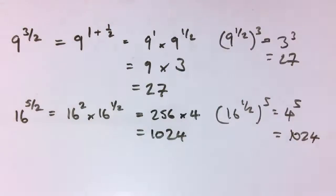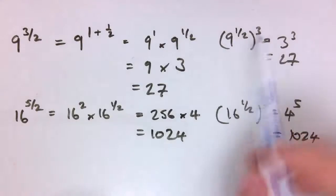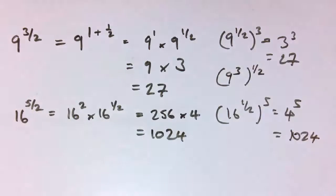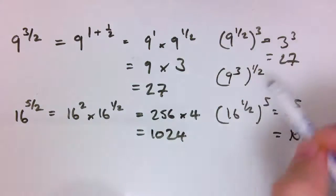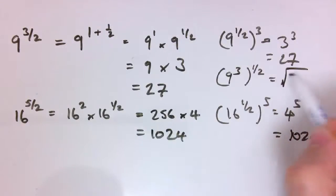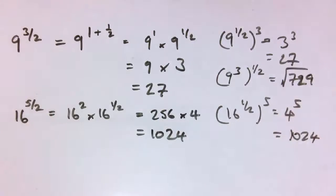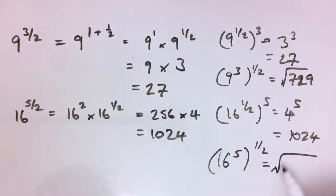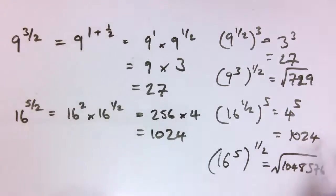So all these different rules — the idea is we're adding to the rules, but we're not changing any of the logic of what's gone before. You could also say 9 to the 3 over 2 is 9 cubed to the 1 half, so it's the square root of 729, which is 27. I've got the calculator here in the background — 16 to the 5 is 1048576, and the square root of that is 1024. So all these rules do work together. That's some fractional indices just with 1 half powers.